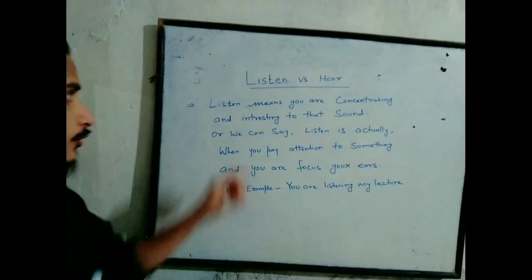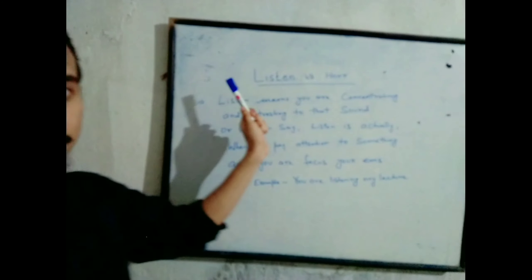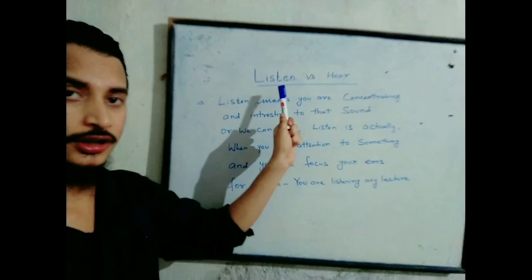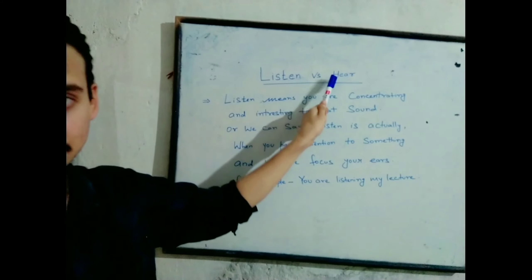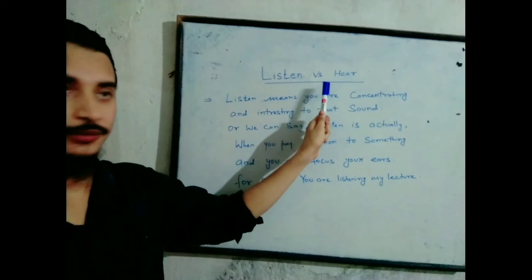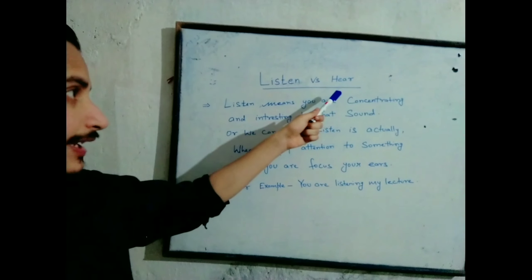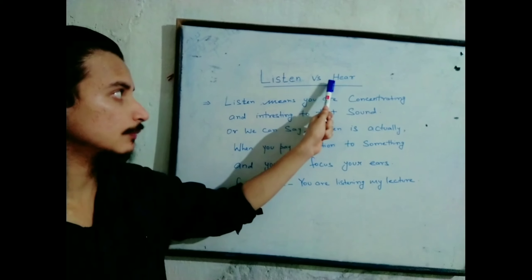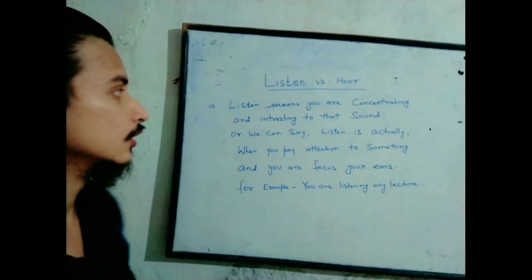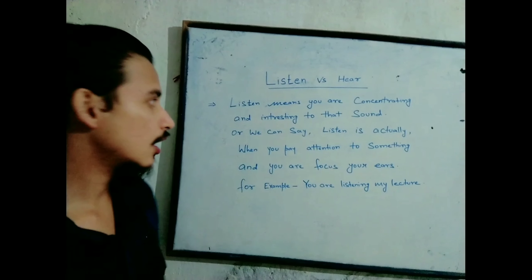Most people pronounce this word incorrectly. The correct pronunciation is 'listen' — not 'lissen'. And for the second word, many people say 'here' or 'heer', but the correct pronunciation is 'hear'.